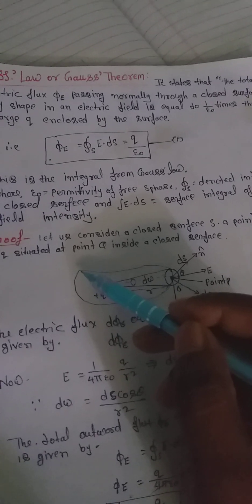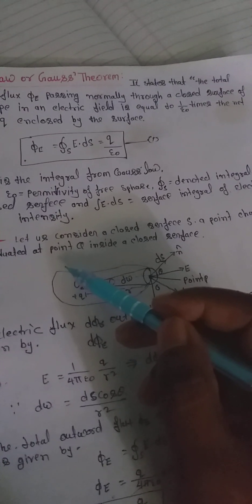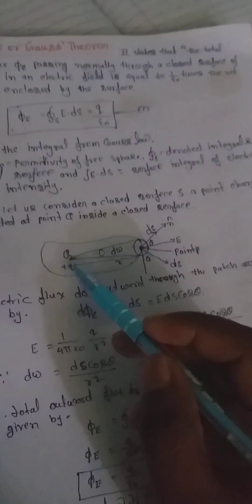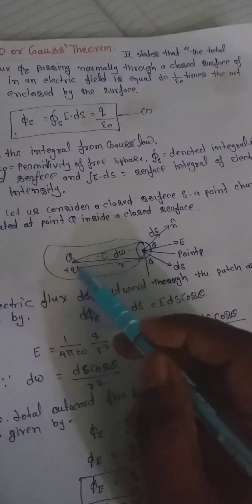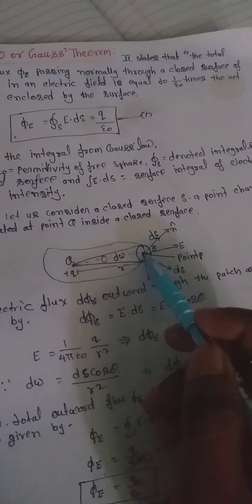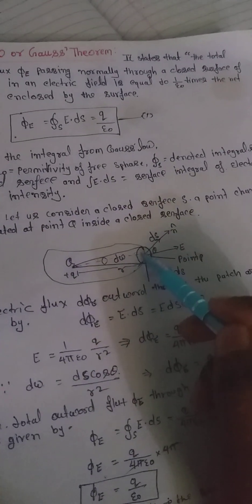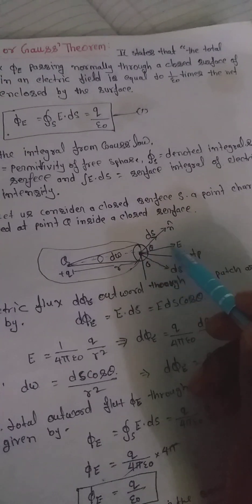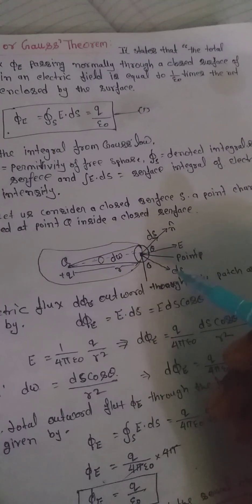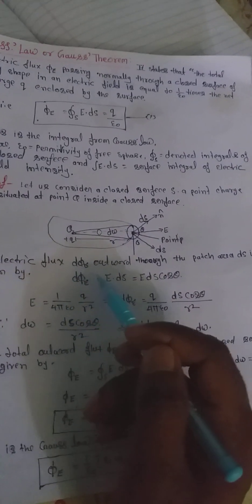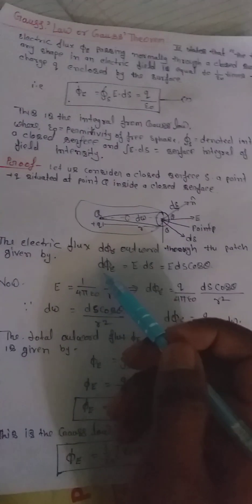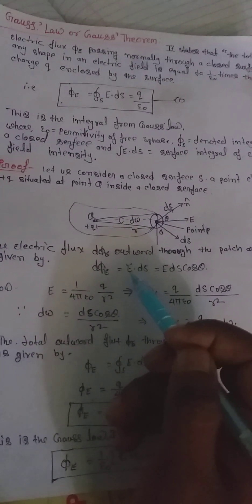The point charge q is located outside the closed surface, where the distance between the charge and the surface element is r, and the surface area element is dS. The angle between dS and the electric field intensity E is θ. The electric flux dΦ_E outward through the small area element is given by dΦ_E = E·dS.